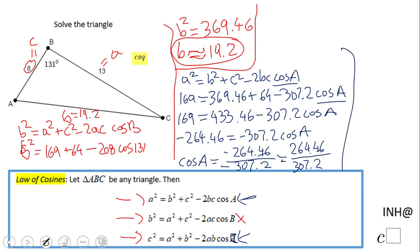How do you find the angle? We're going to use the inverse cosine function. Use your calculator and find this. Usually second cosine is the way you get it. Then you put that quotient, 264.46 divided by 307.2, and we get the measure of angle A, which is 30.6 degrees, rounded to the nearest tenth.